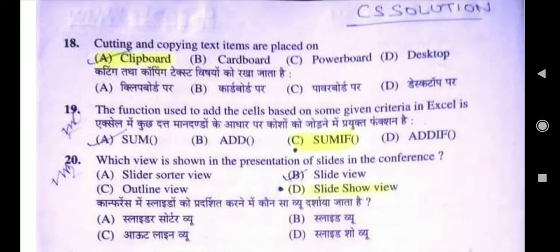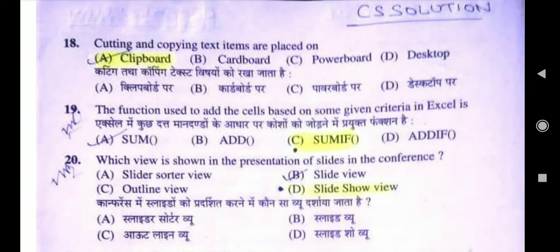Question 20: Which view is shown in the presentation of slides in a conference? The right answer is option D, Slideshow View. You use Slideshow View to deliver your presentation to your audience. Slideshow View occupies the full computer screen, exactly the way your presentation will look on a big screen when the audience sees it. Slide Sorter View gives a view of all your slides in thumbnail form, making it easy to sort and organize the sequence of slides, and you can also prepare your presentation for printing.